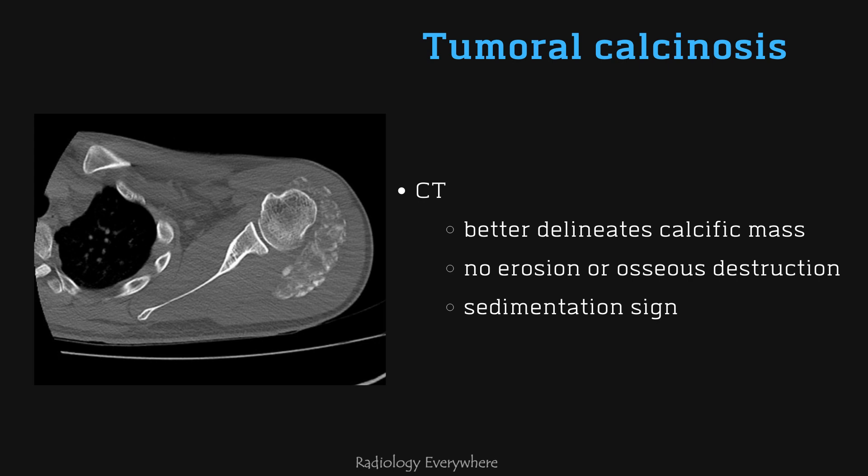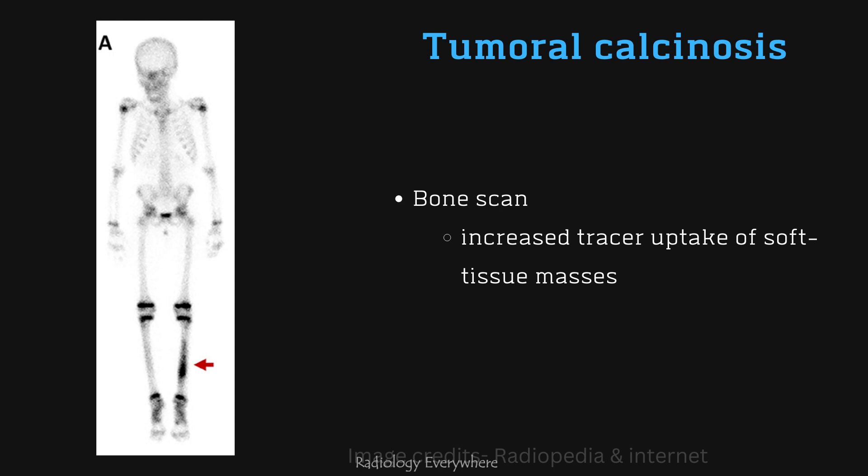CT better delineates these calcific masses, with no erosion or osseous destruction by adjacent soft tissue masses. You can see cystic appearance with multiple fluid-calcium levels caused by calcium layering — this is called the sedimentation sign. The underlying bones are normal, and there is increased tracer uptake of soft tissue masses on bone scan.